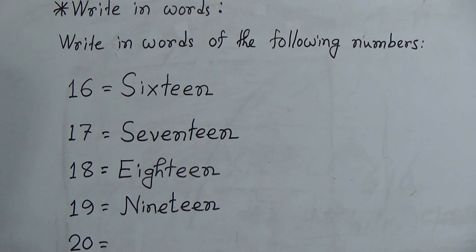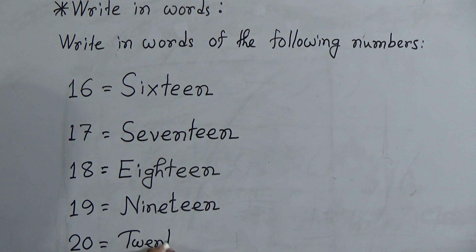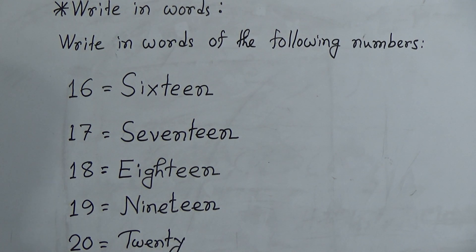The next number, our today's last number, is 2 and 0, which makes the number 20. The spelling of 20 is T-W-E-N-T-Y, 20.